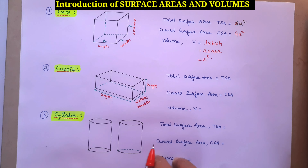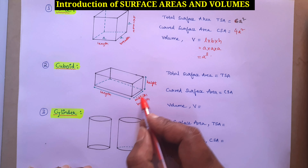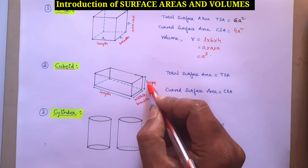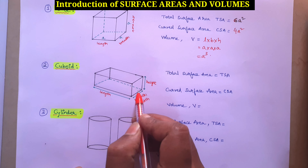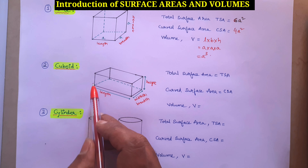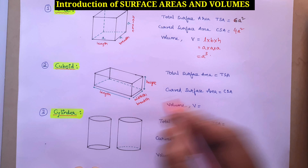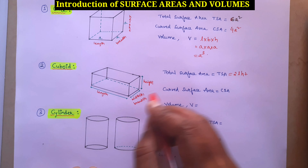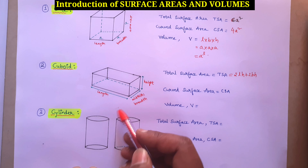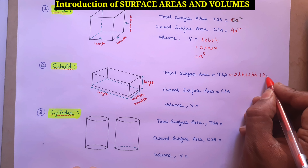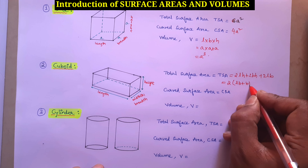The second figure is cuboid, which looks like a brick. The dimensions are length, breadth (or width), and height. Total surface area means finding front and back, left and right, and top and bottom. Front surface area needs length × height, so front and back gives 2LH. Left and right gives 2BH. Top and bottom gives 2LB. So total surface area formula is 2(LB + BH + HL).